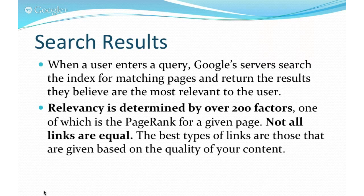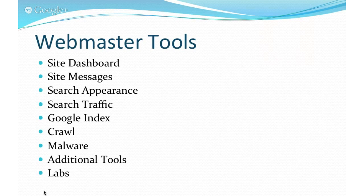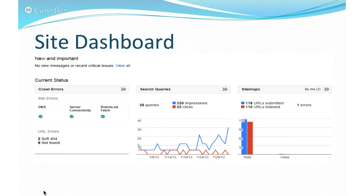These are the tool categories you will find in Webmaster Tools — we will go over each of them separately. The site dashboard provides an overview of your site status. You can see whether Googlebot is experiencing any crawl errors, a graph of search queries, and the number of URLs that have been submitted and indexed. From the dashboard you can dig deeper into any errors that have been reported.